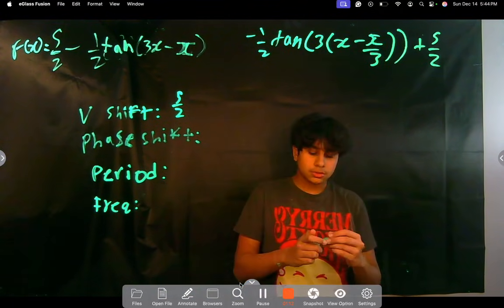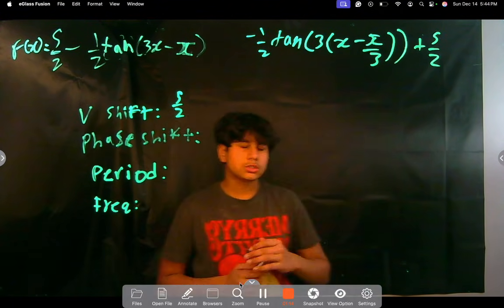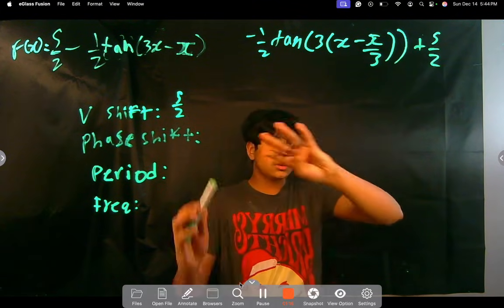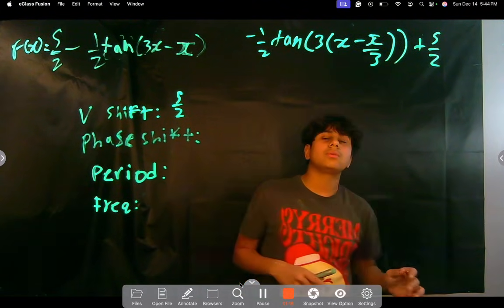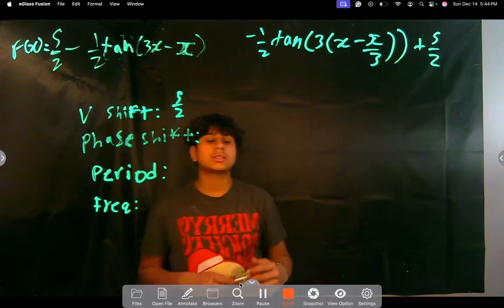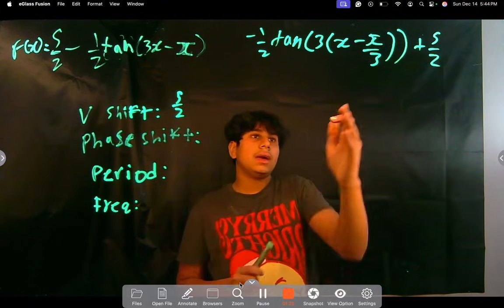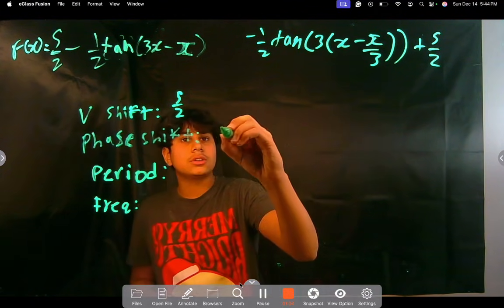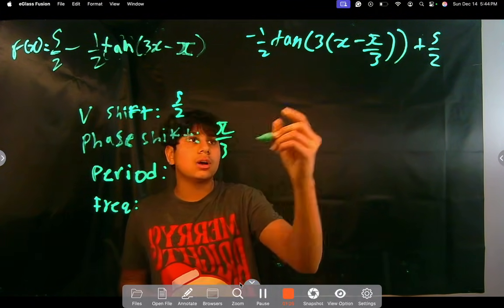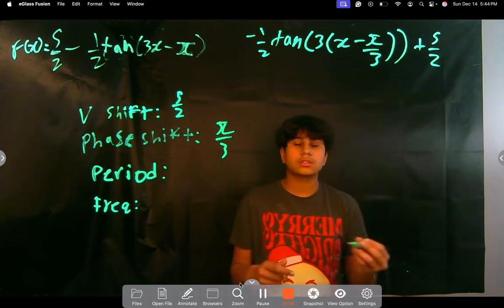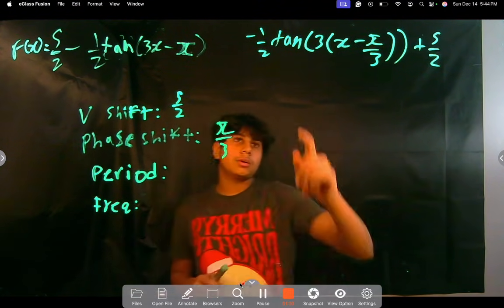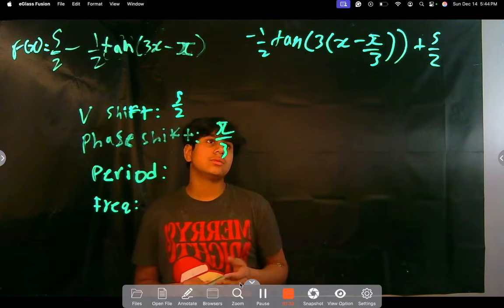because you have to always make sure to factor out the 3 so that you can be consistent with how you solve for the x, like when you want to find the period and the phase shift. So the phase shift here is π/3 because everything is opposite in the x. So here it's multiplied by 3, but it'll actually be 1/3. You'll see that soon.